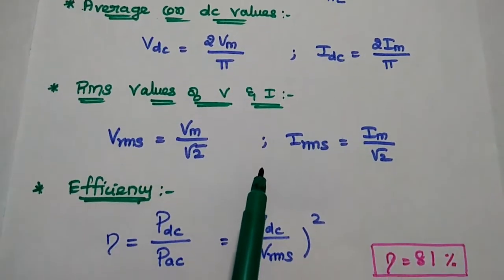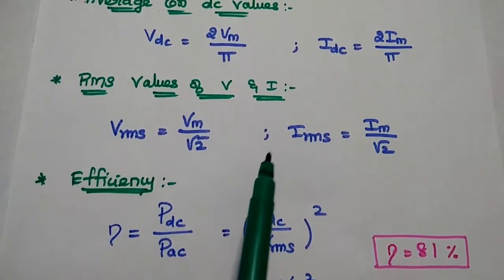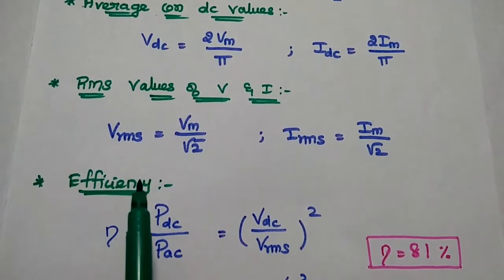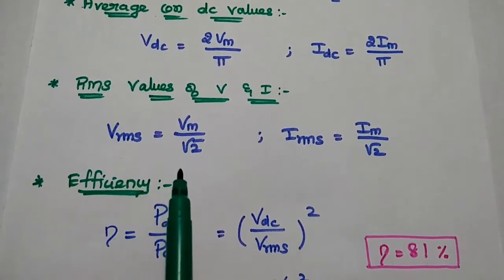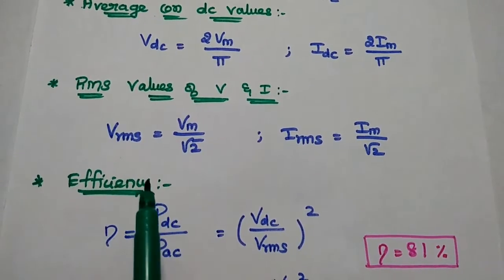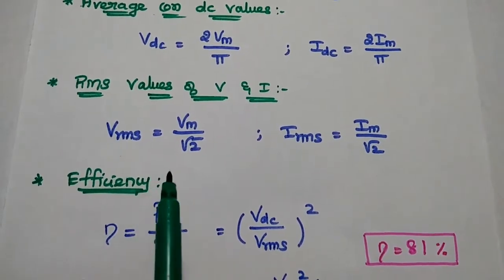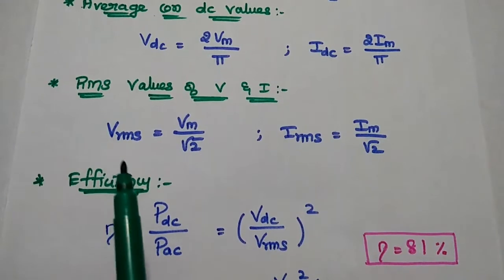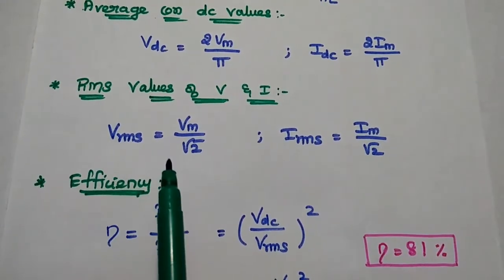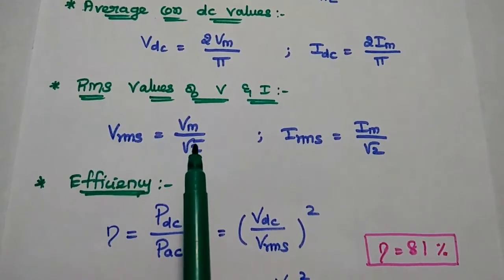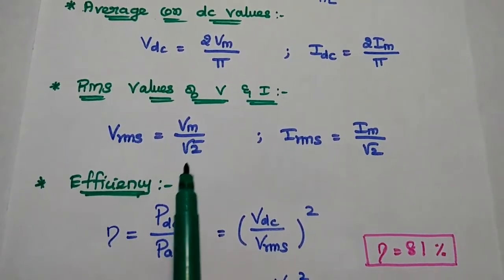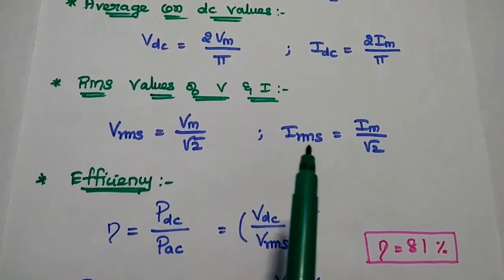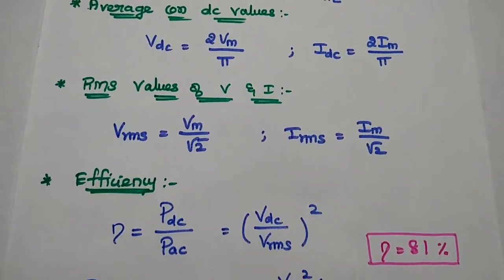Next, the RMS values of voltage and current — RMS means root mean square values — represent the AC content. Here the RMS voltage is Vm divided by √2, and Irms is equal to Im divided by √2.